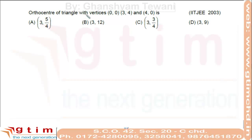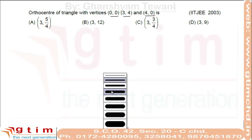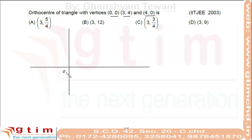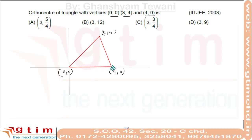Find the orthocenter of a triangle with vertices (0, 0), (3, 4), and (4, 0). Since one of the vertices is the origin, let's draw the triangle on the coordinate axis. This is the origin, (4, 0) is somewhere here, (3, 4) is somewhere here. Join these three points to form the triangle.